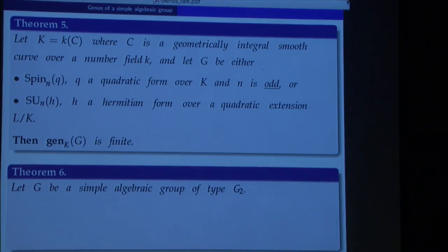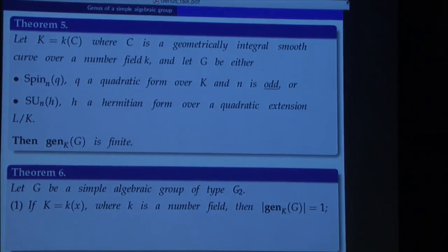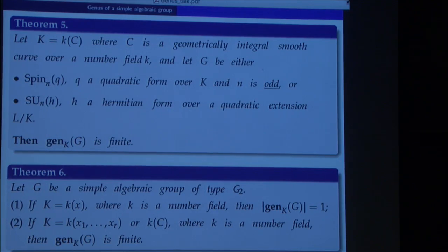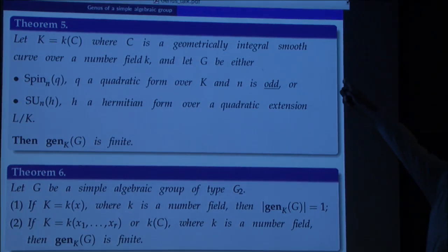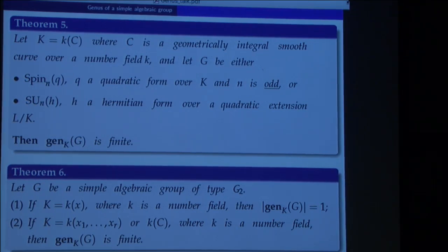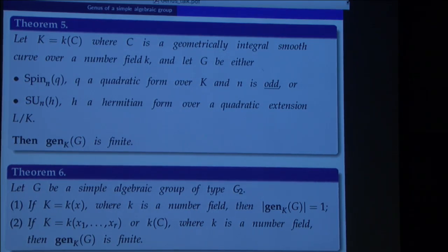We have similar results for type G2: if we have a purely transcendental extension of a number field, the genus always reduces to one element. But again, in certain situations including when the field is a function field over a curve or a purely transcendental extension of k, the genus is finite. So we have some data, but as you see at this point it's quite limited.